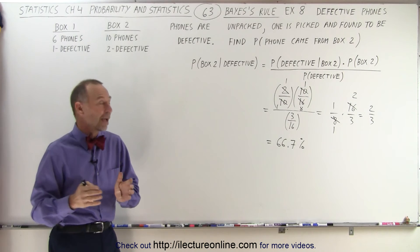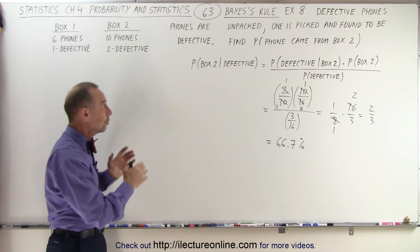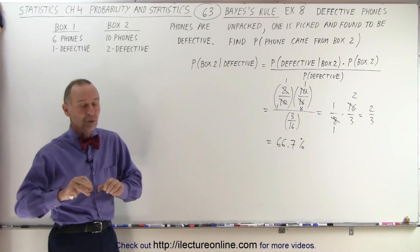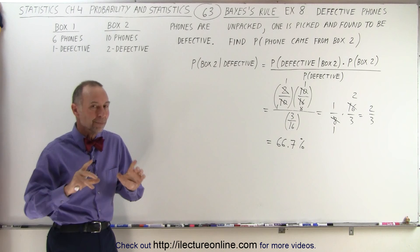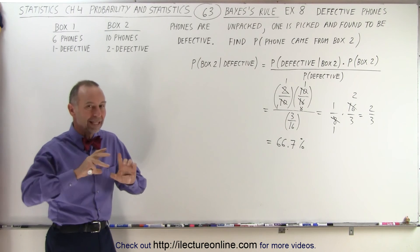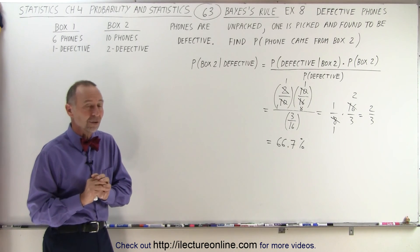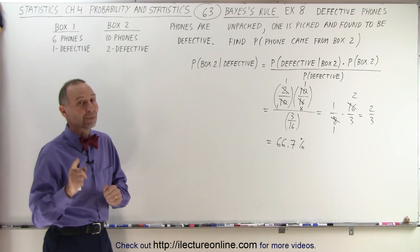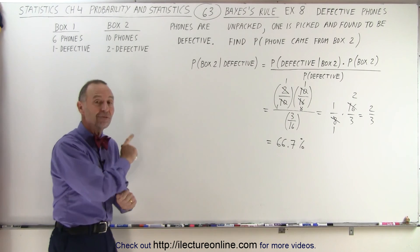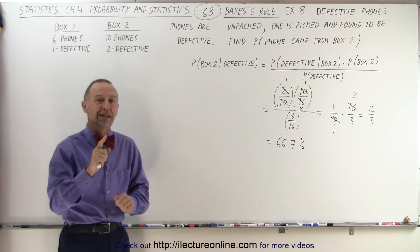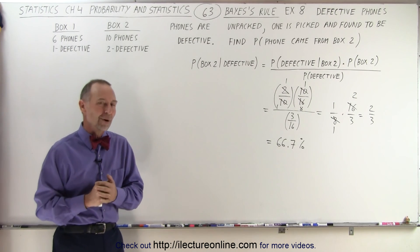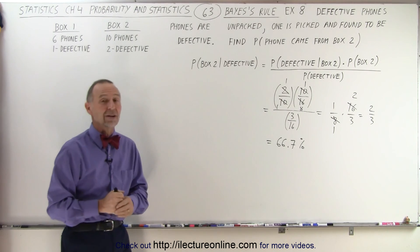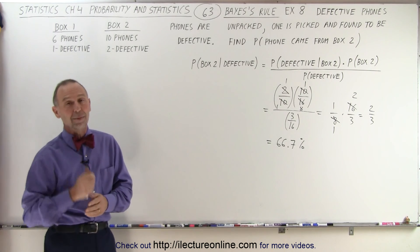In the next example we're going to do the same thing but we're not going to unpack the phones. We're going to at random pick a box, then pick a phone out of that box at random, and see what the probability is that if that phone is defective it came from box two — and how that changes the way we calculate that probability.